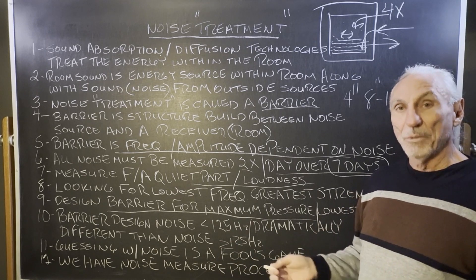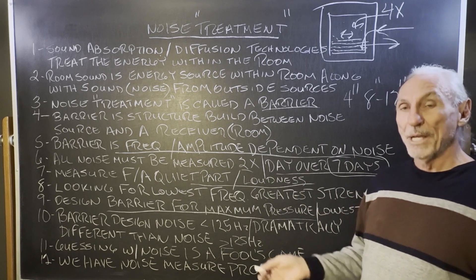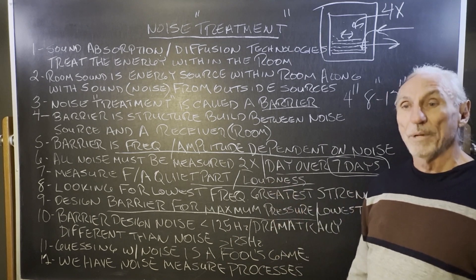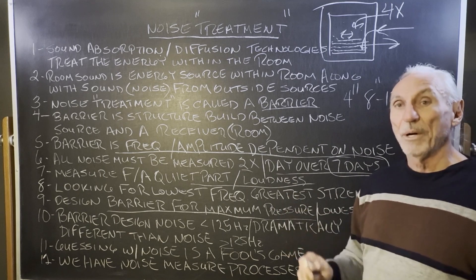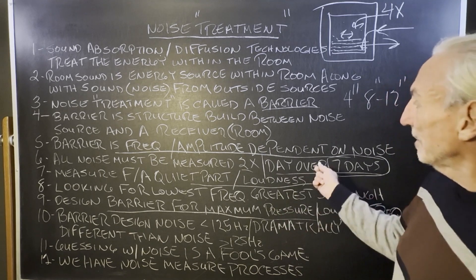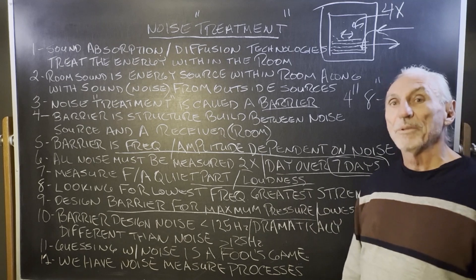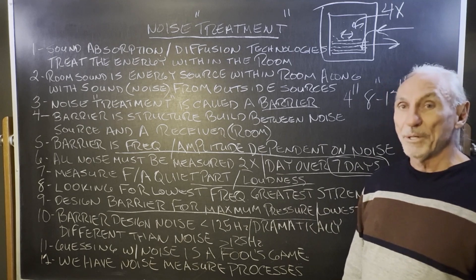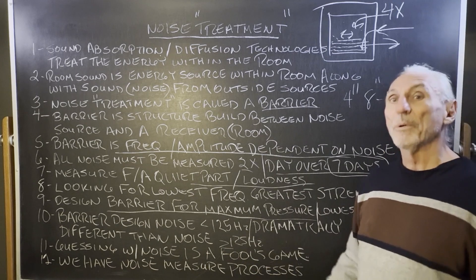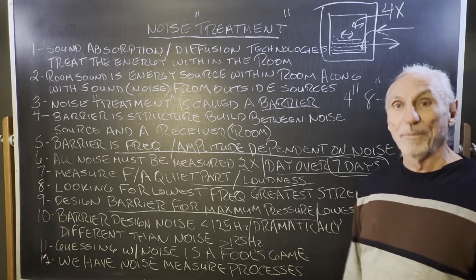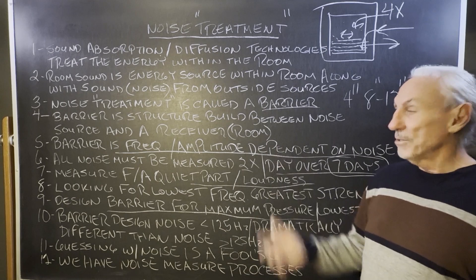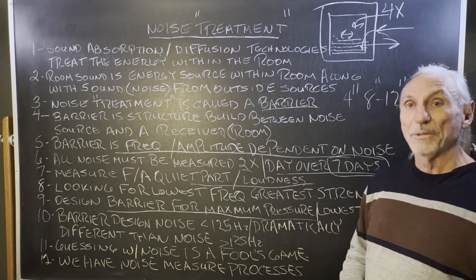Follow our instructions — we have an instructional video. Take noise measurements twice a day over a week, put it on our online form, send it to us, and then we send you the barrier design. It's specifically designed to the frequency and amplitude of your noise. We have barrier systems that we use, so we can help you with noise treatment from the measurement process all the way through the build process.